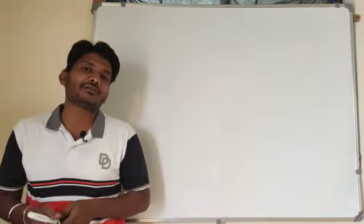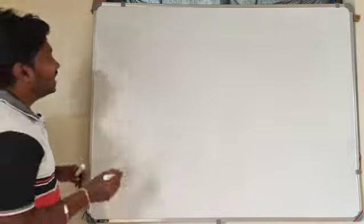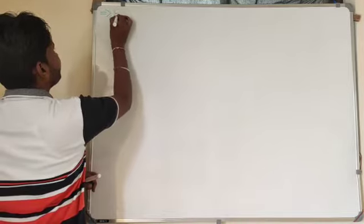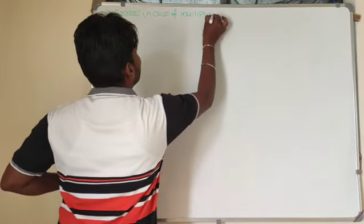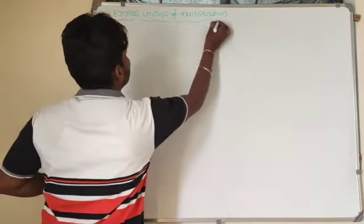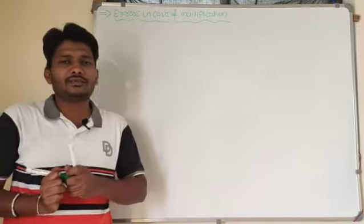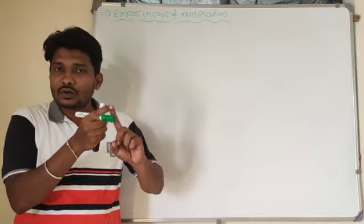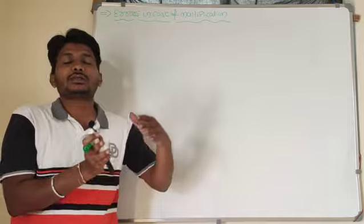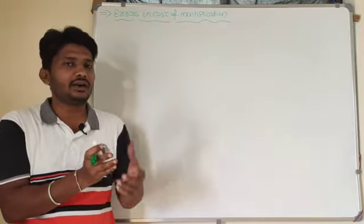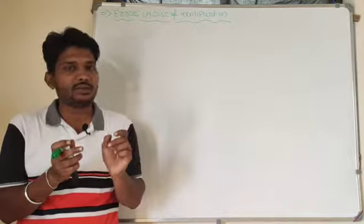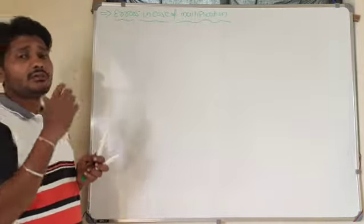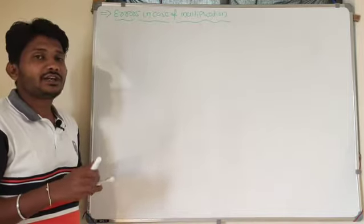Similarly, we consider what the equation will be in case of multiplication. For example, the physical quantity force is f equal to m into a, where mass and acceleration terms are there. While measuring mass we get certain error, and while measuring acceleration we also get certain error. So what is the total error in force? I want to find the generalized formula for errors when the equation consists of multiplication terms.